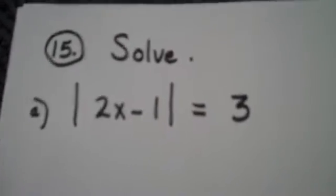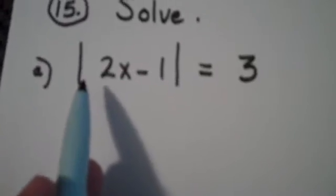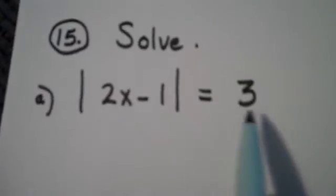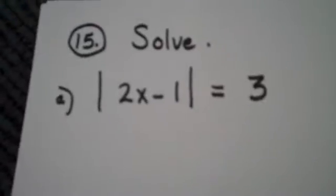Okay, ladies and gentlemen, let's continue on to problem number 15. Problem number 15, if you'll see, absolute value of 2x minus 1 equals 3 is an absolute value equation.